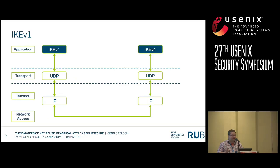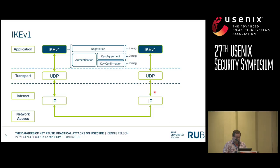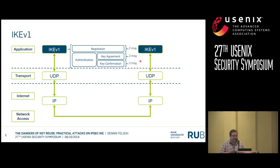Let's focus on IKEv1. IKEv1 is UDP-based. Looking at the application layer, it's a six-message protocol. The first pair of messages negotiates cryptographic parameters — similar to setting up cipher suites in TLS — including cryptographic algorithms and validity periods for how long tunnels may be established. The second pair is essentially a Diffie-Hellman key exchange and also contains part of the authentication. The third pair confirms the key, similar to TLS finished messages.